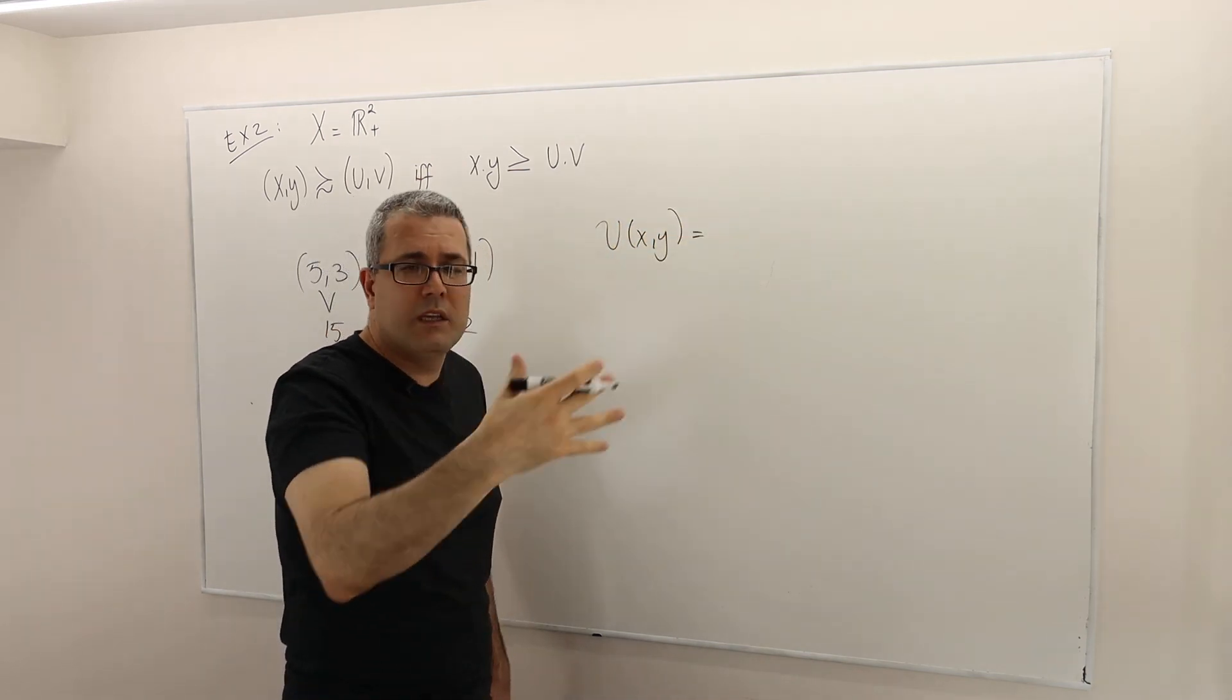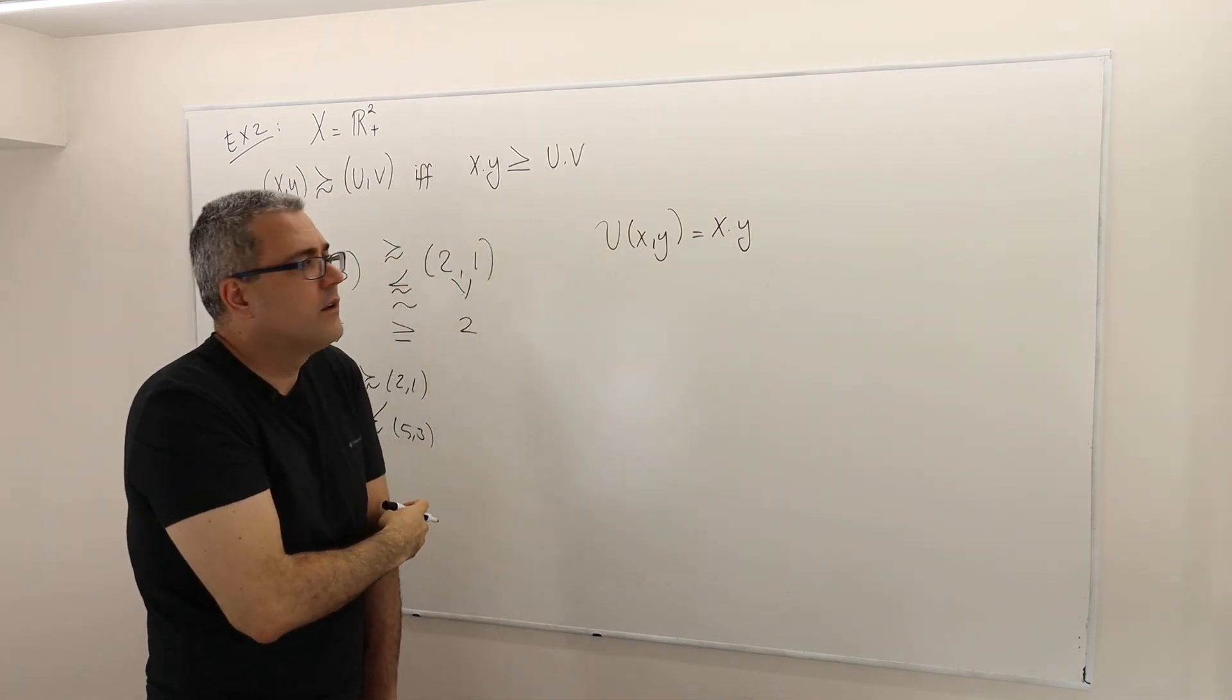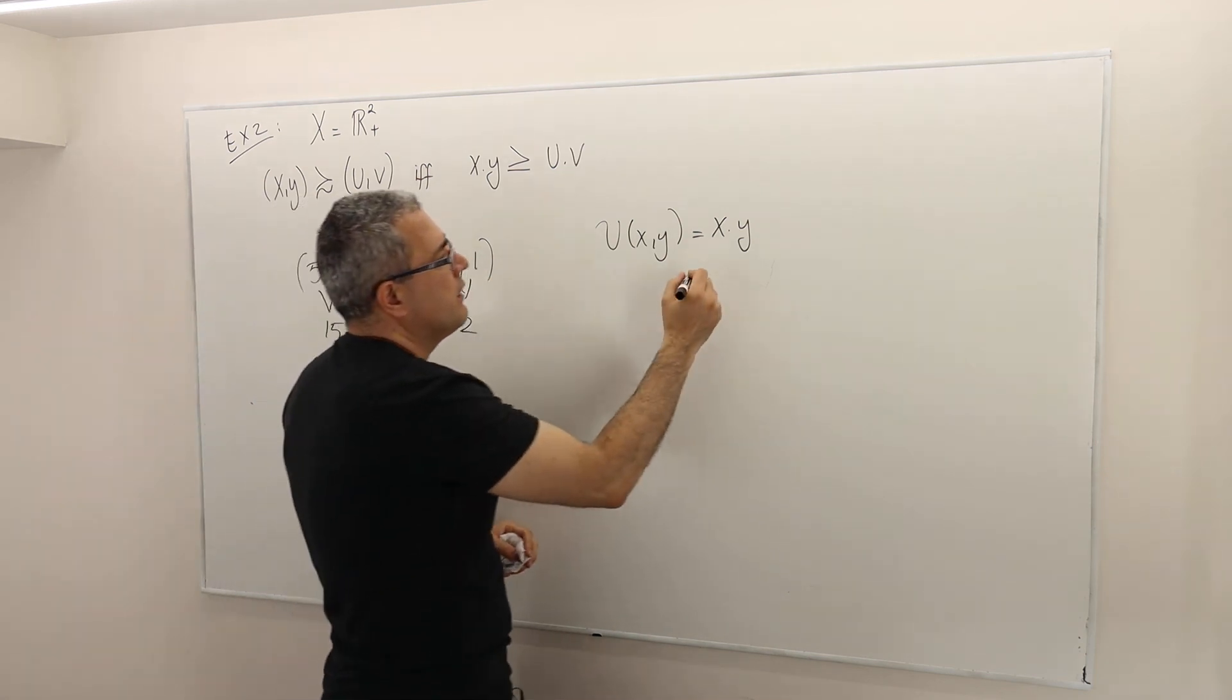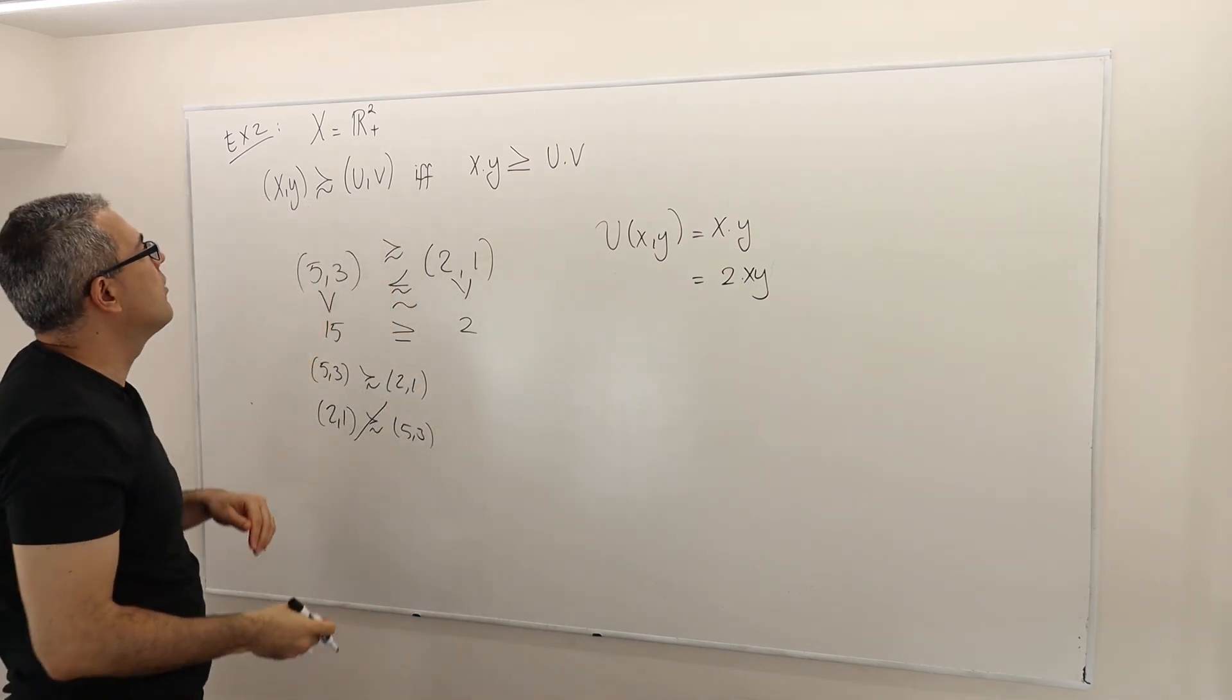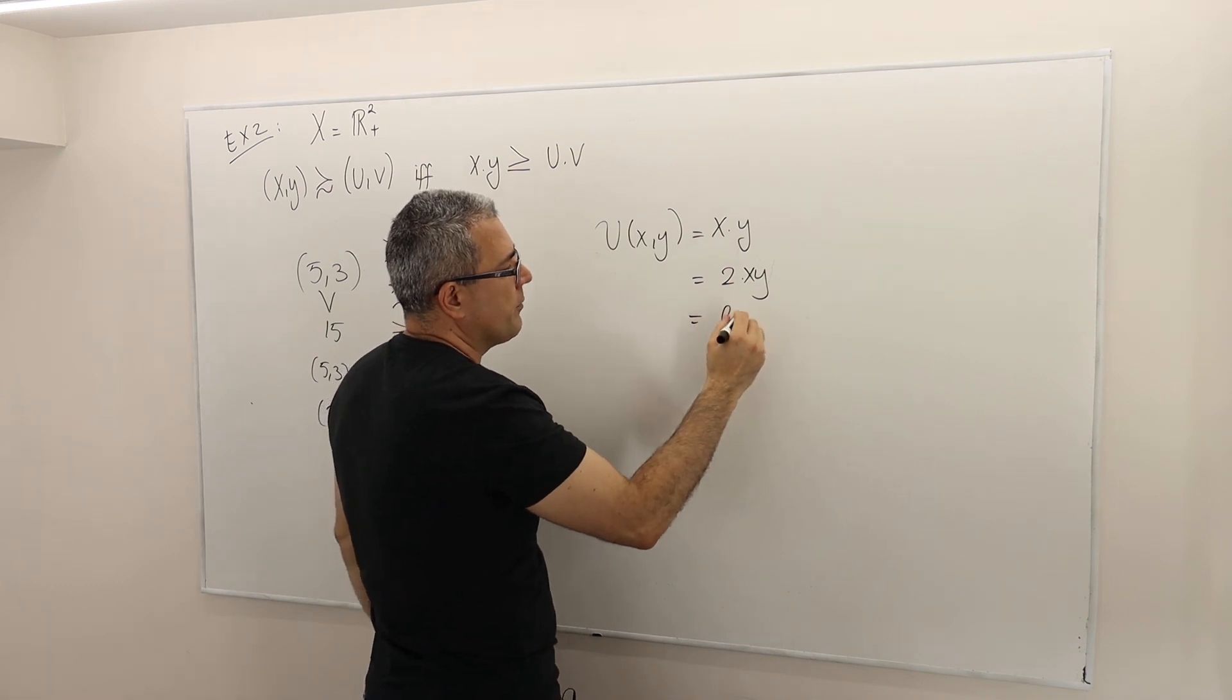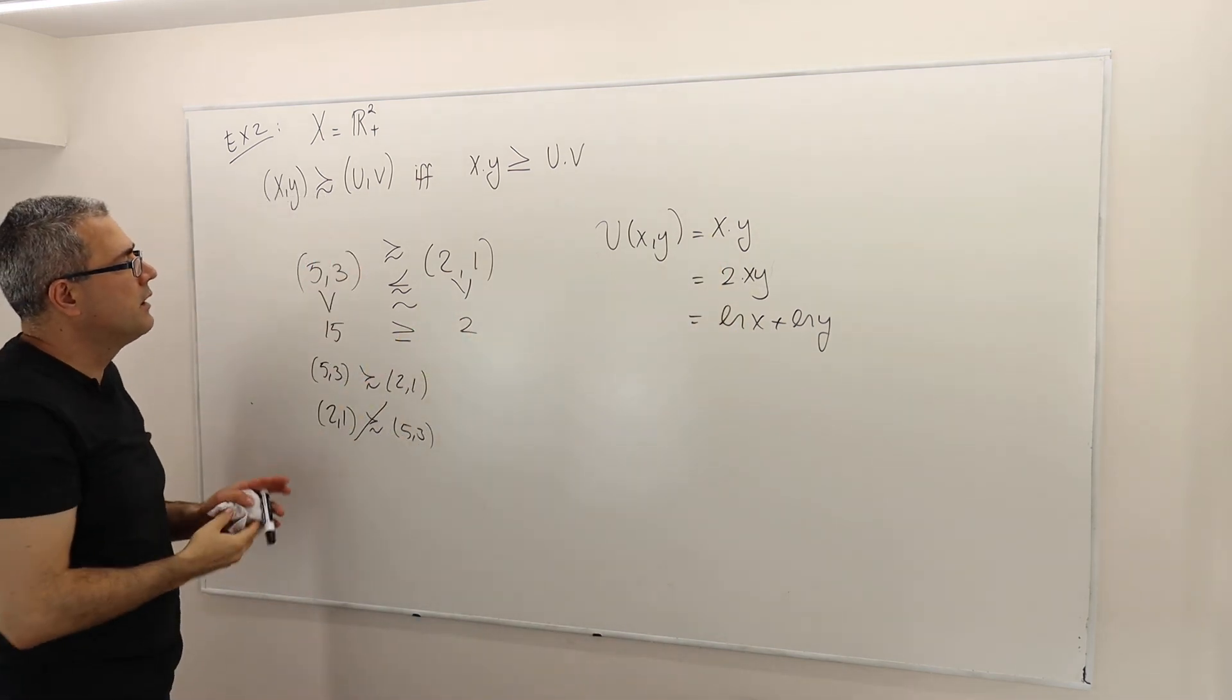You may anticipate this. But if your utility function is x times y, like Cobb-Douglas type of function, this utility function is going to represent this preference relation. It's not just this, obviously. u(x,y) equals 2 times xy will also represent the same binary relation. So we know that as long as you take the monotonic transformation, it's going to work. By the way, this is also a monotonic transformation: ln x plus ln y. So all of them represent this binary relation.